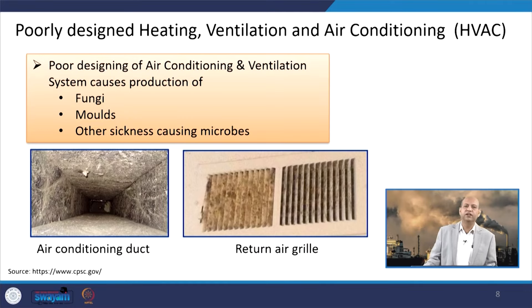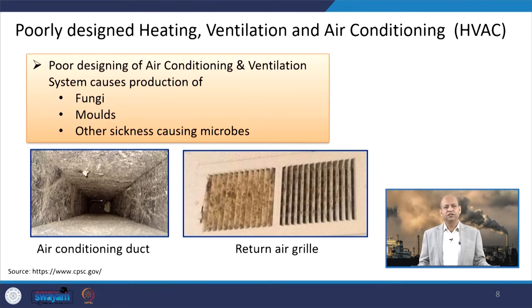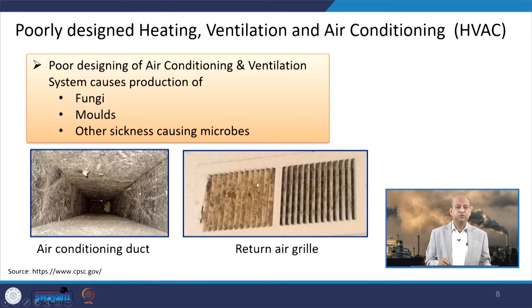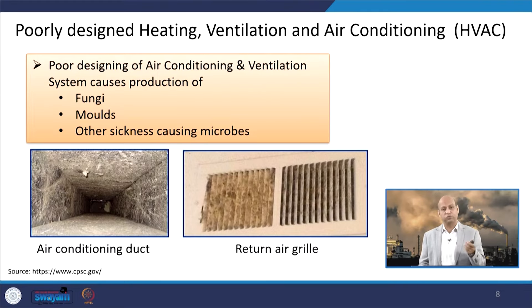A poorly designed HVAC — heating, ventilation and air conditioning — system can result in several kinds of pollutants, including fungi, molds, and other sickness-causing microbes or bacteria, adding to allergic-related health issues. If the air conditioning duct is not clean, is moist, and causes microbial activity, it is very dangerous to health. The return air grill, if not cleaned regularly and periodically, can itself become a source of air pollutants rather than improving air quality.